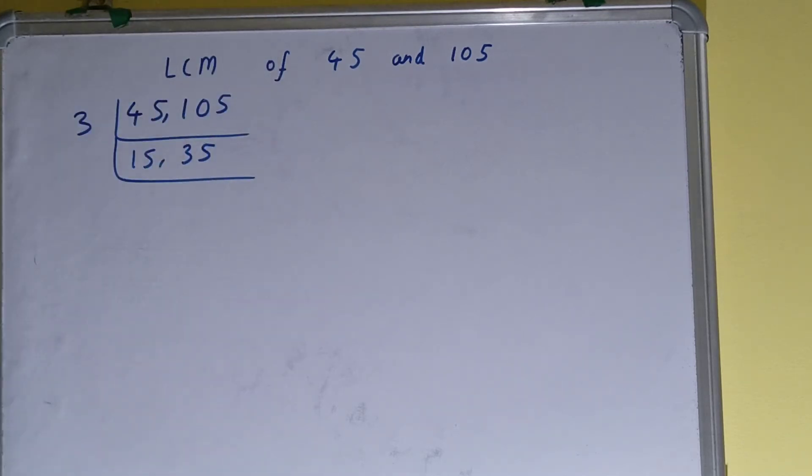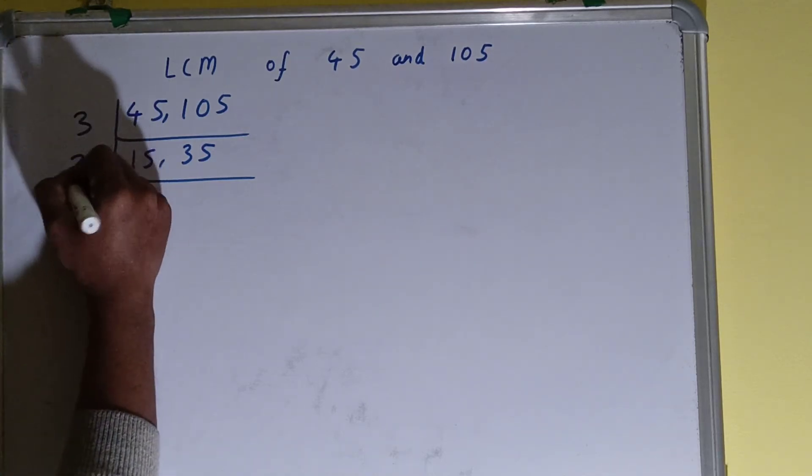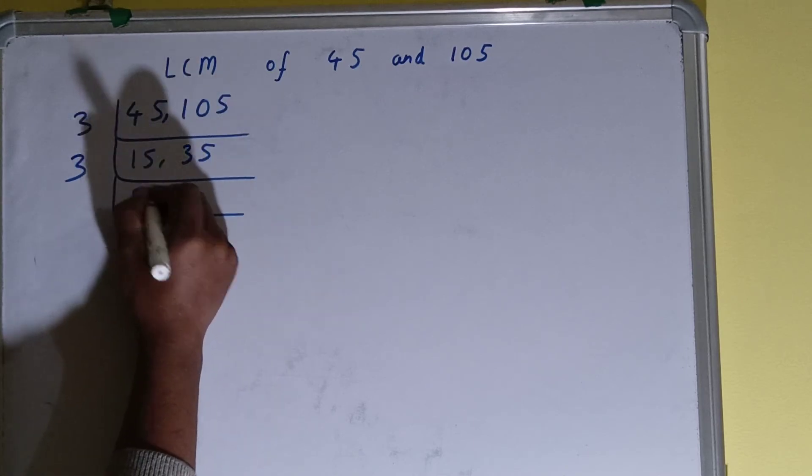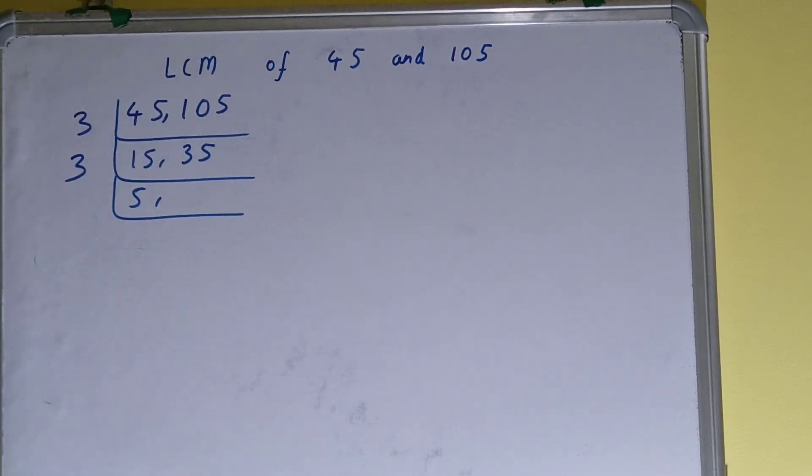Again, if we check, is there any of the numbers divisible by 3? Then only the first number is divisible by 3. So we'll divide and this will become 5. The second number, 35, is not divisible by 3, so just copy this down.